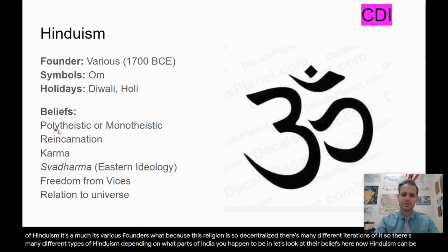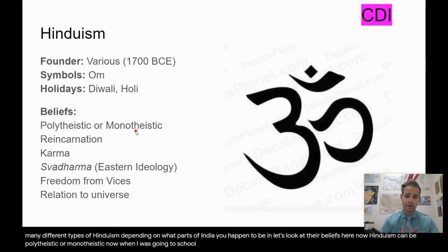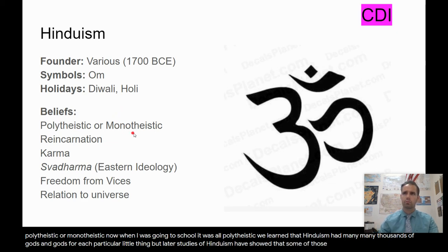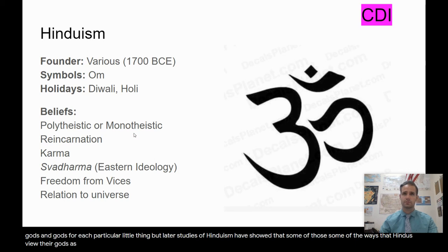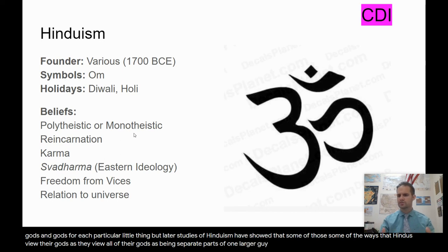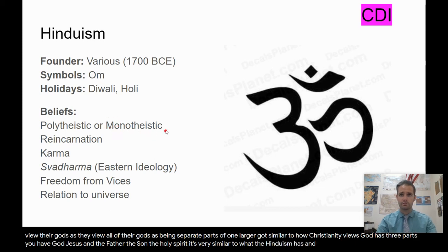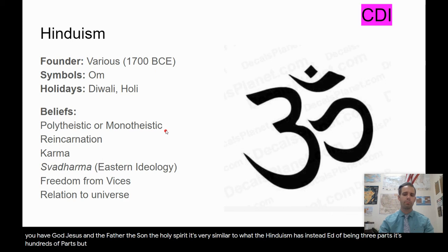Hinduism can be polytheistic or monotheistic. When I was going to school, it was all polytheistic — we learned that Hinduism had hundreds, if not thousands, of gods. But later studies have shown that some Hindus view all of their gods as separate parts of one larger god, similar to how Christianity views God as three parts: the Father, the Son, and the Holy Spirit. Instead of being three parts, it's hundreds of parts, but they're all part of the same god. So depending on your view, Hinduism could be polytheistic or monotheistic.